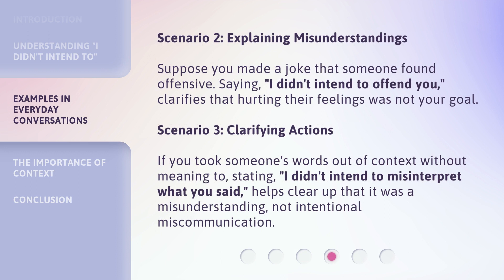Scenario 2: Explaining misunderstandings. Suppose you made a joke that someone found offensive. Saying 'I didn't intend to offend you' clarifies that hurting their feelings was not your goal. Scenario 3: Clarifying actions. If you took someone's words out of context without meaning to, stating 'I didn't intend to misinterpret what you said' helps clear up that it was a misunderstanding, not intentional miscommunication.